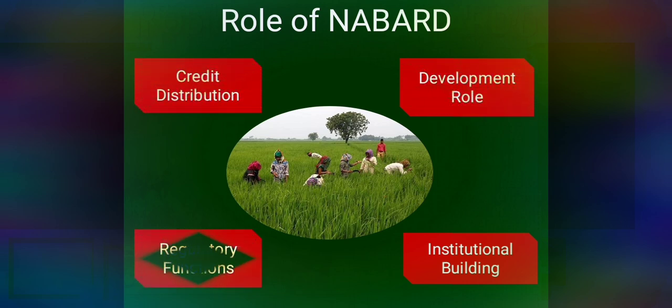The first role is credit distribution, which includes various types of institutions and facilities. Short term credit is provided by the state cooperative bank, regional rural banks, and other financial institutions approved by the RBI for purposes such as seasonal agriculture operations, marketing of agriculture products, and marketing and distribution of inputs such as fertilizers, pesticides, etc.